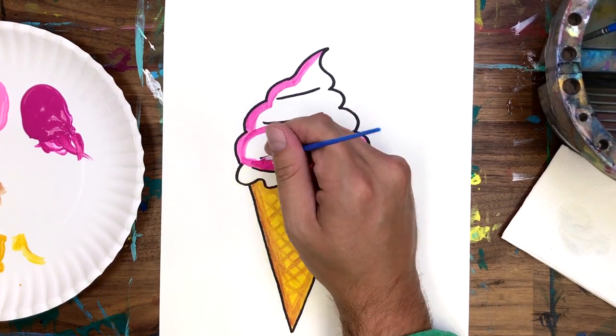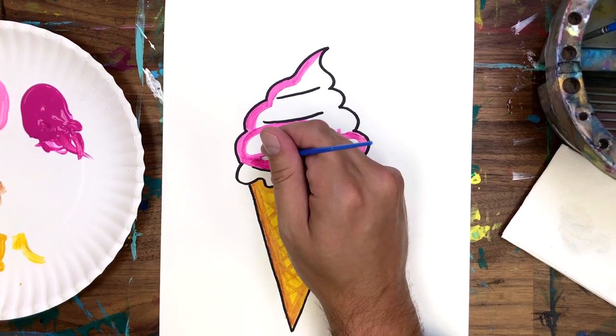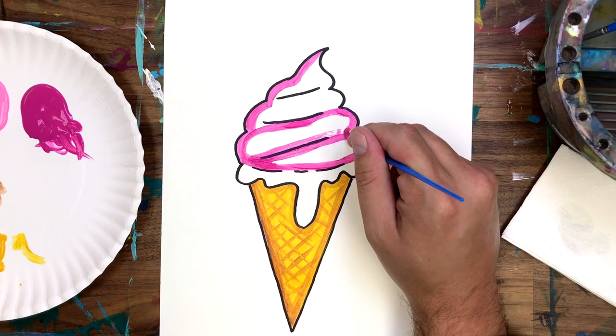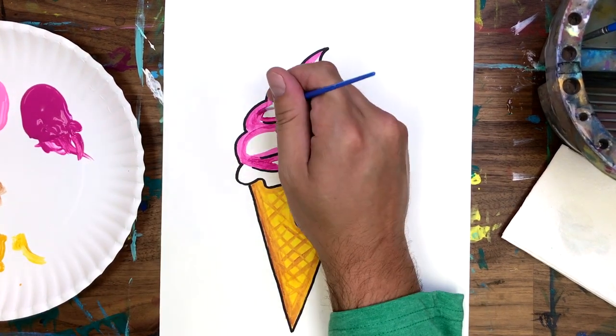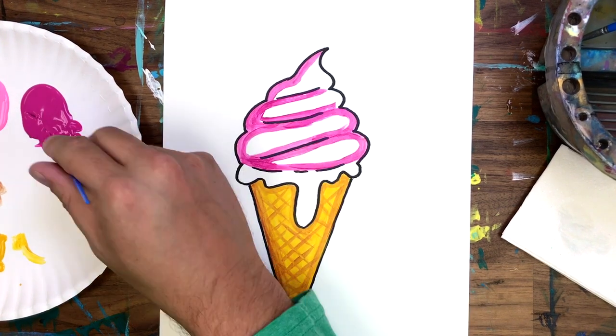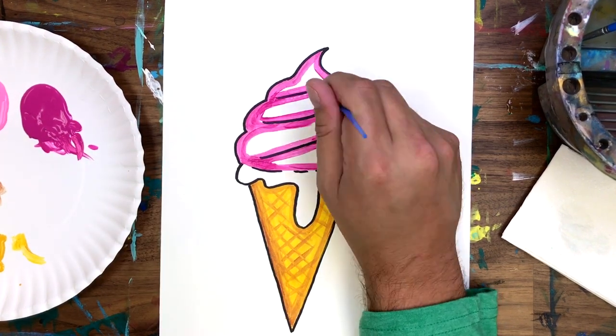Did you know that 9% of all milk produced in the entire United States is used to make ice cream? It also takes about three gallons of milk to make just one gallon of ice cream. That's a whole lot of milk. Milk? Pretty sure it's pronounced milk, Eric.